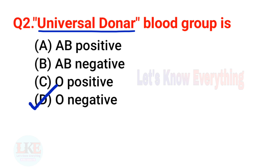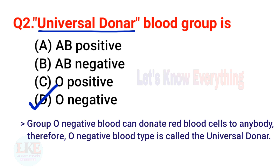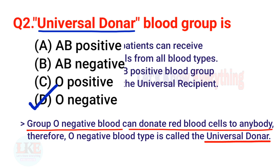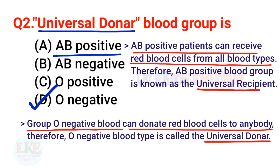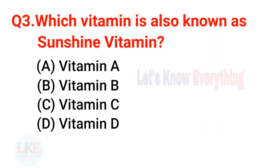Question 2: Universal donor blood group is O negative. Group O negative blood can donate red blood cells to anybody, therefore O negative blood type is called the universal donor. Remember, AB positive patients can receive red blood cells from all blood types, therefore AB positive blood group is known as the universal recipient.